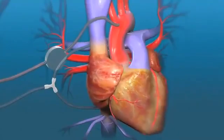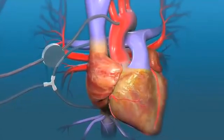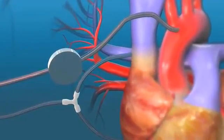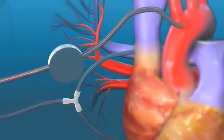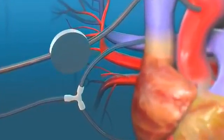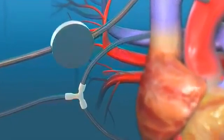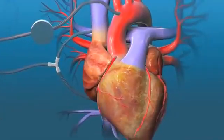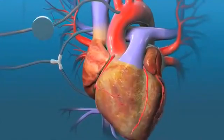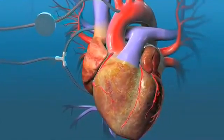At this point, your heart will be connected to a heart-lung machine. Tubes are used to reroute your blood into this machine, which takes over the functions of the heart and lungs during the operation. Once the heart-lung machine has taken over, your heart will be temporarily stopped and the blood inside removed.